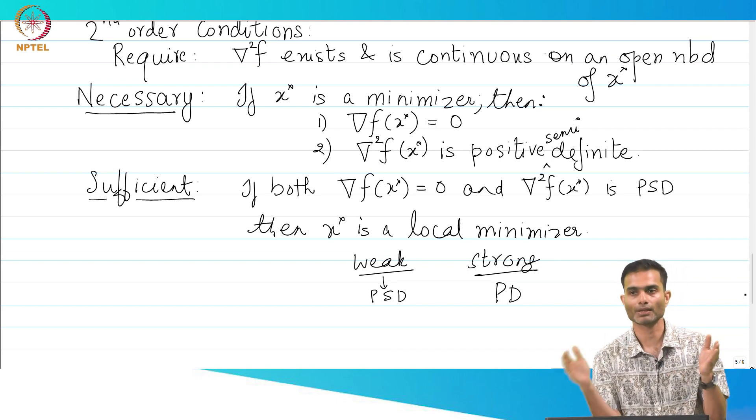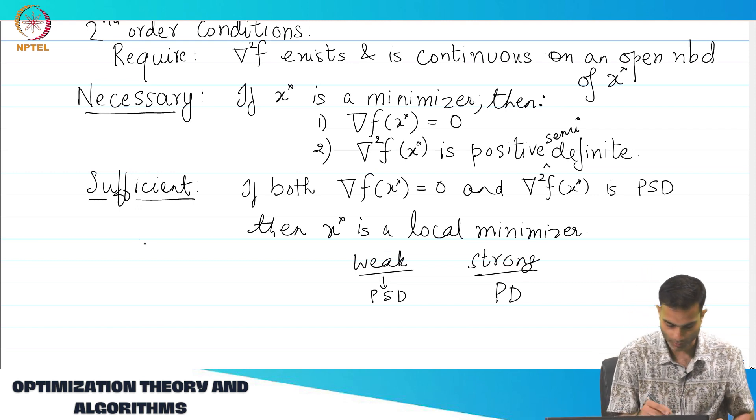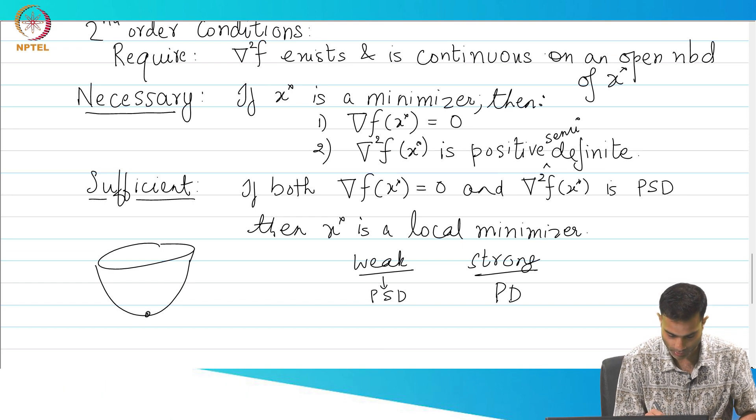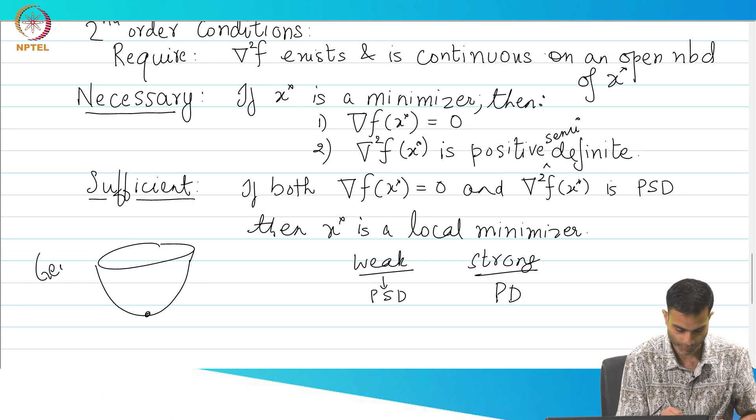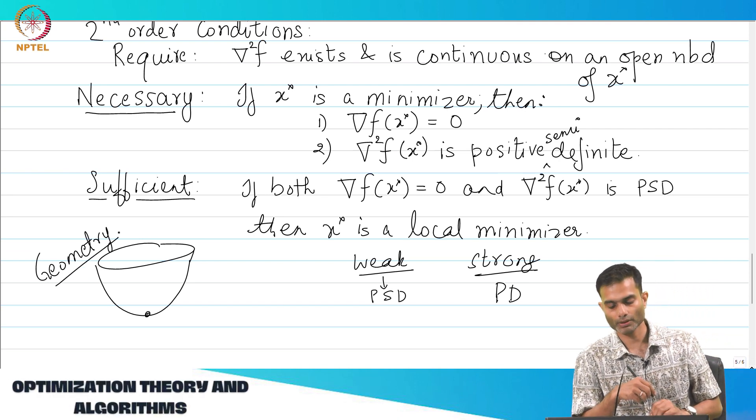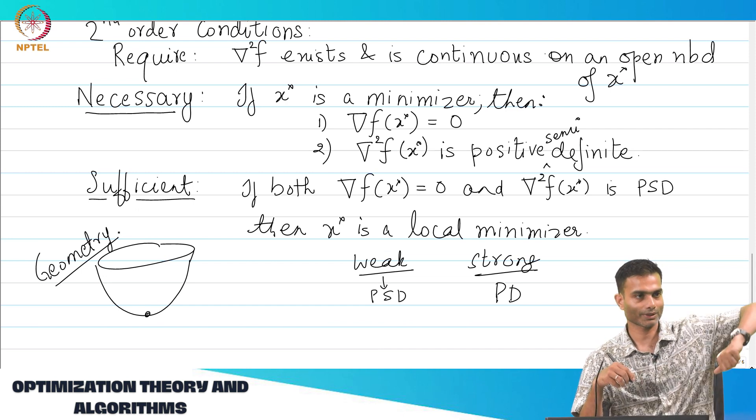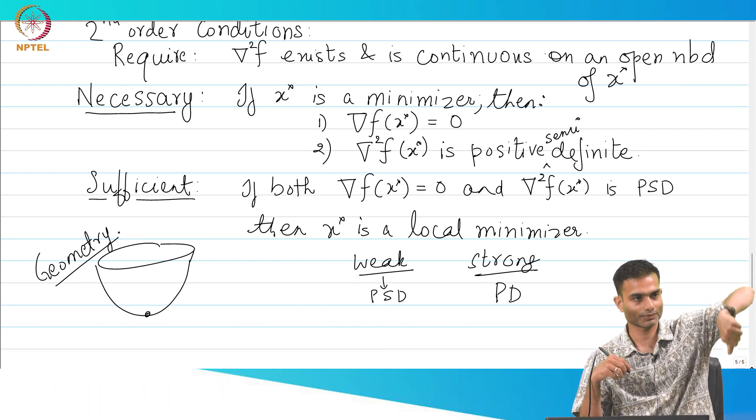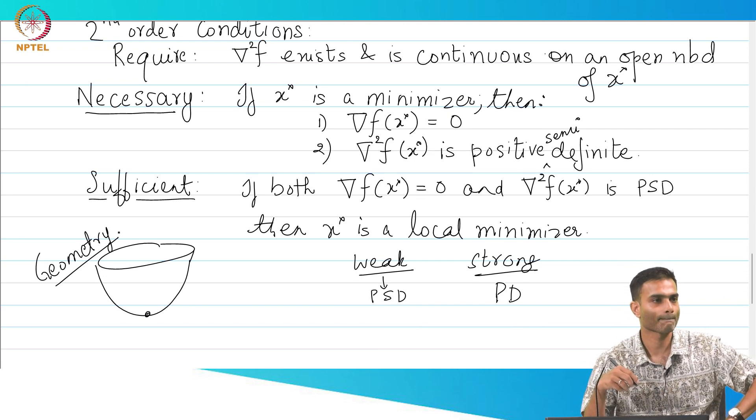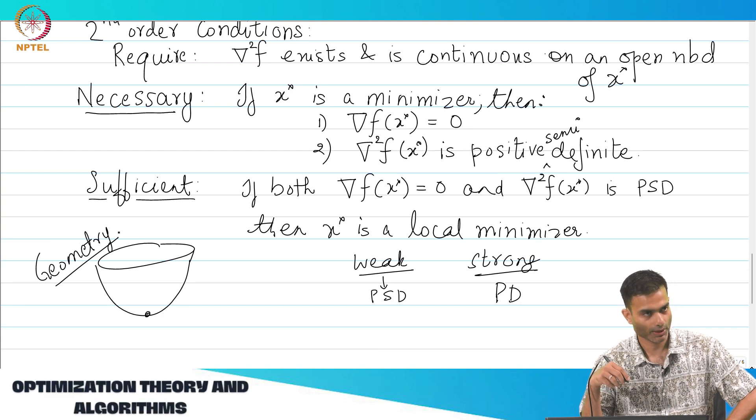And that geometric property is captured by the Hessian being positive definite. So, it is a one to one geometric translation intuition. So, if you want we can draw this. So, the geometric intuition because if you remember second derivative of a function talks about curvature. If the curvature is always positive, then it is always one kind of a shape.